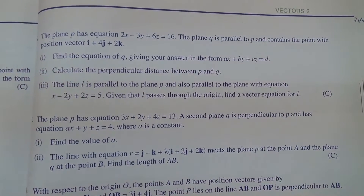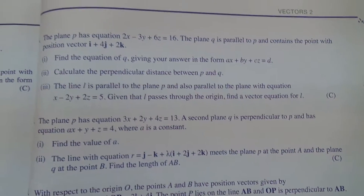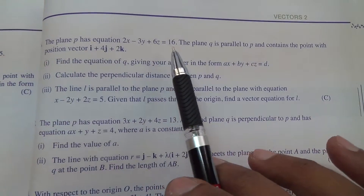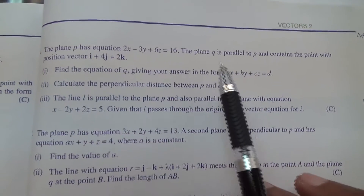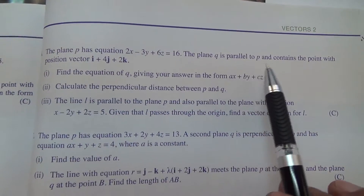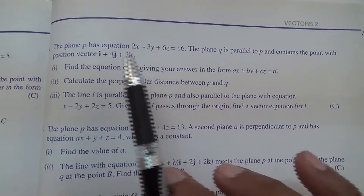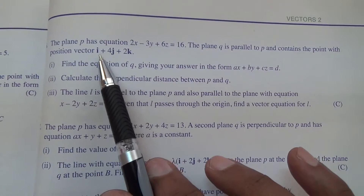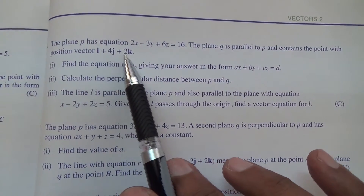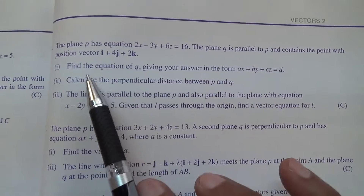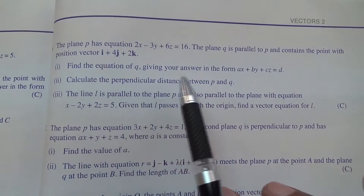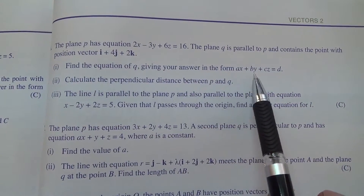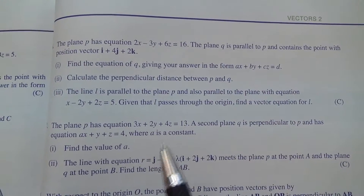The plane P has equation 2x minus 3y plus 6z equals 16. The plane Q is parallel to plane P and contains the point with position vector i plus 4j plus 2k. Find the equation of Q, giving your answer in the form ax plus by plus cz equals d.